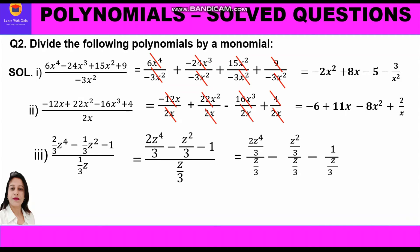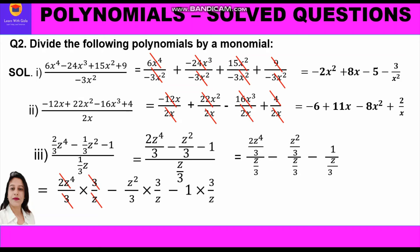For division of two fractions we multiply by the reciprocal. So: 2z⁴/3 × 3/z = 2z³ (z⁴/z = z³, 3/3 cancel). Then -z²/3 × 3/z = -z (z²/z = z, 3/3 cancel). Then -1 × 3/z = -3/z. The final answer is 2z³ - z - 3/z.